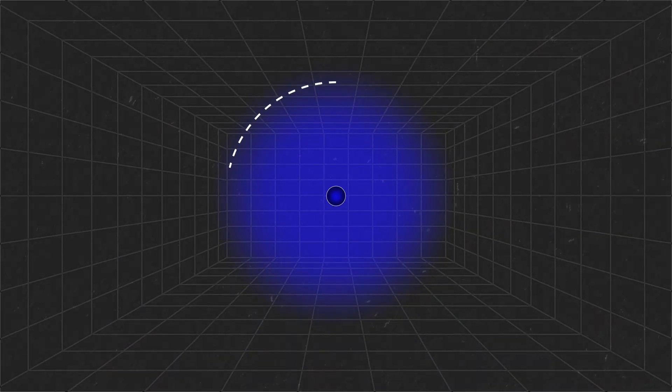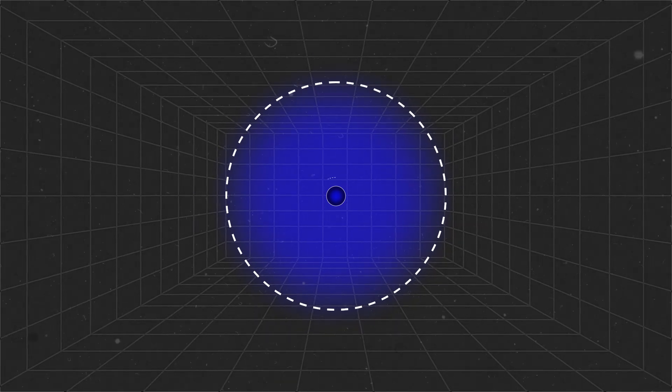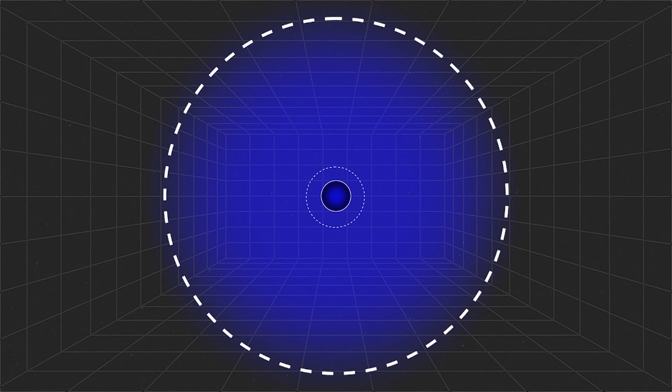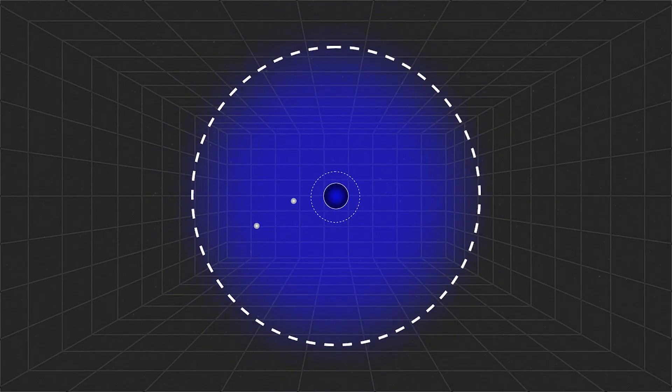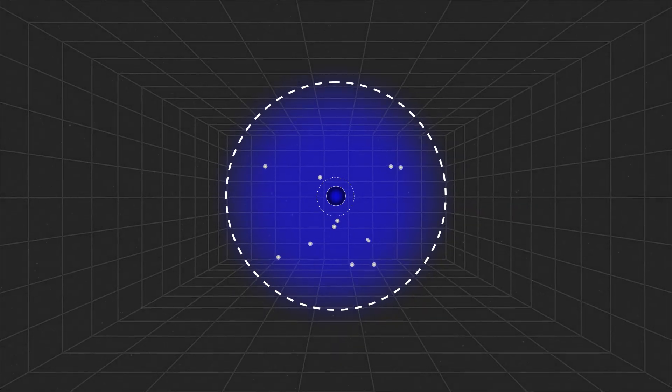This makes the effective charge of an electron appear different at varying distances. At short distances, very close to the electron, one can see more of the bare charge of the electron, but at larger distances, the effects of the virtual particles start to average out and one sees a different screened charge due to all these virtual particle effects.